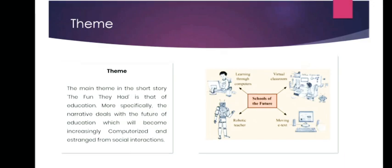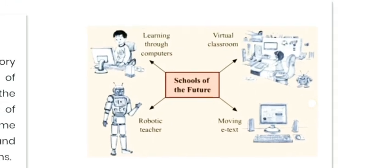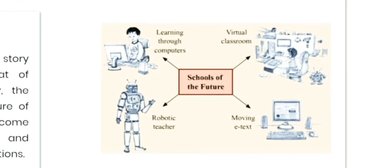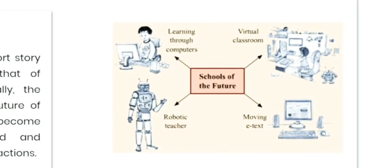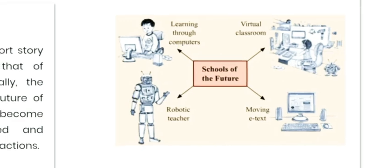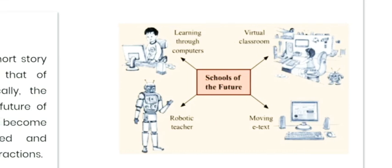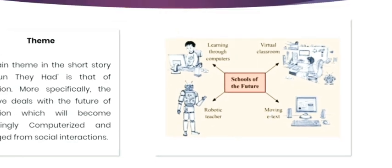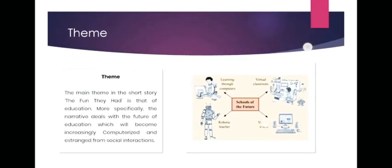The theme highlights that in the future, schools will be more computerized and different in terms of social interactions. There will be no social gathering as you have in school today — only one child in one room. Looking at a picture of a future school, we can see how it might look: a virtual classroom with a system where the student sits at a seat and learns through a computer. There will be a mechanical robotic teacher and moving e-text on the screen, while time will be digitalized.